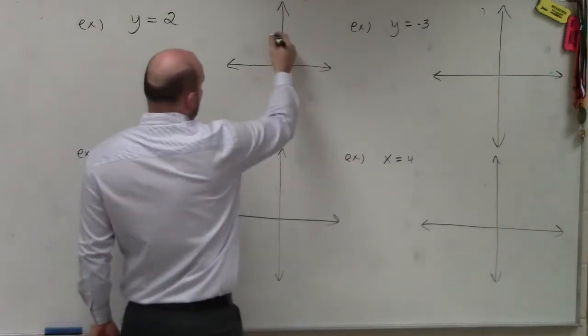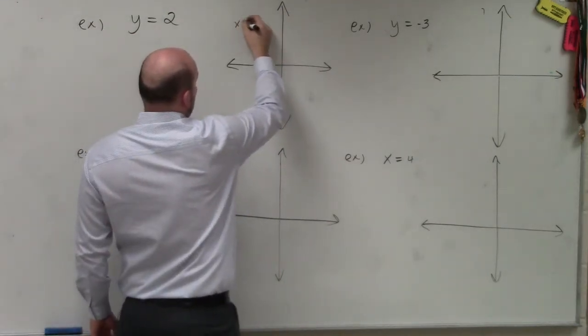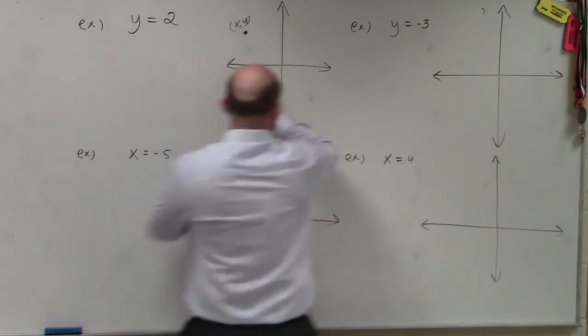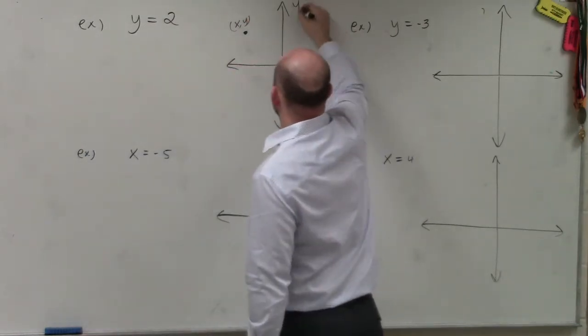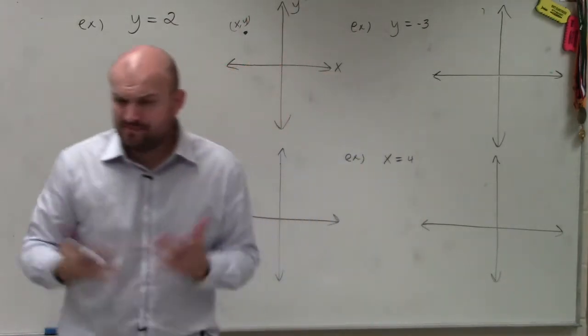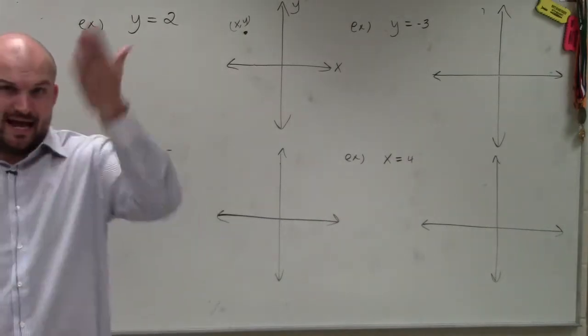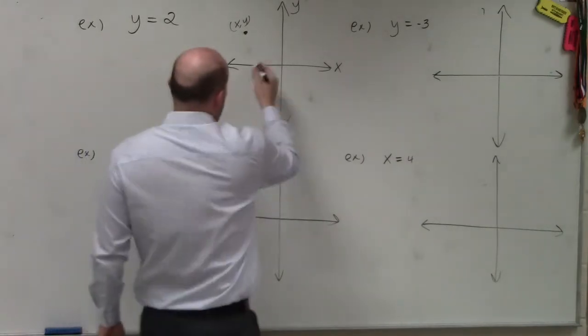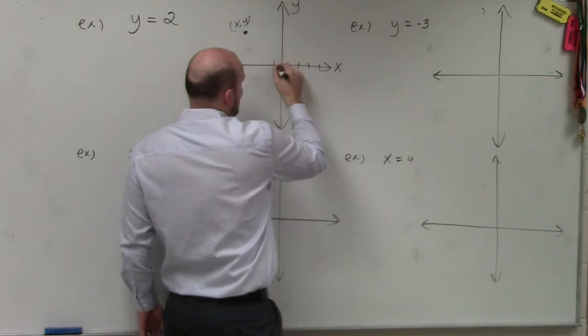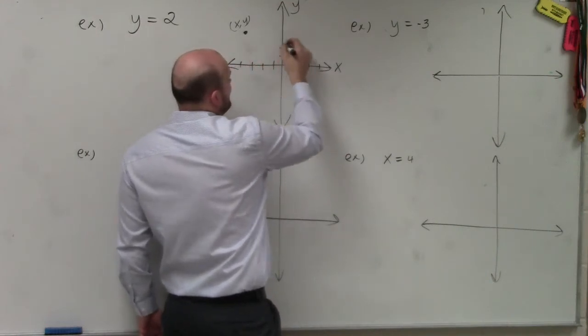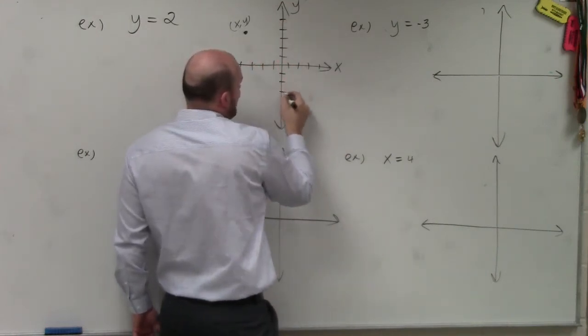And because any kind of coordinate point that you plot has an x and a y-coordinate, because over here we have the x-axis and here we have the y-axis. So when we're graphing, basically all we have is a number line and a number line. So we have a horizontal number line, which is the x-axis, and we have a vertical number line, which is the y-axis.